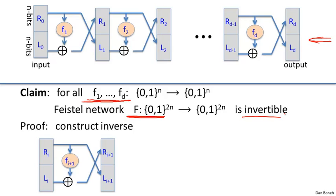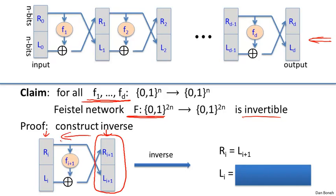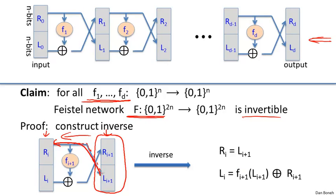Let's look at inverting one round of a Feistel network. Given the output R_{i+1}, L_{i+1}, we want to compute R_i, L_i. R_i is easy: it simply equals L_{i+1}. For L_i: L_{i+1} is fed into function F_{i+1}, the result is XORed with R_{i+1}, and that gives L_i. So this is the inverse of one round of a Feistel network.